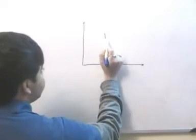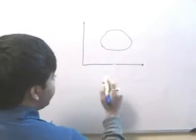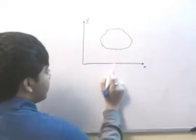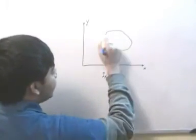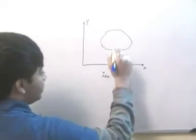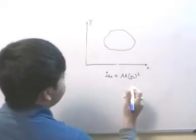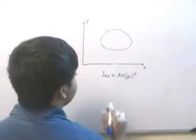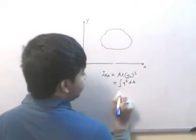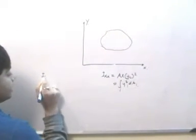For example, if there is an irregular body, with x as the x-axis and y as the y-axis, then Ixx — the moment of inertia of the body about the x-axis — is equal to the total area into yc squared, where yc is the distance of the centroid from the xx axis. It can also be written as the integration of yi squared times dai.